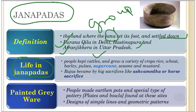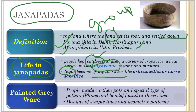People in these Janapadas kept cattle - we have seen the importance of cattle in the previous chapter, and battles were fought over cattle. They grew a variety of crops, and notably sugarcane was a new development, as it was not grown in the Harappan cities. Rajas became recognized as Rajas by performing big sacrifices like the Ashwamedha or horse sacrifice, imposing their supremacy over the Jan.